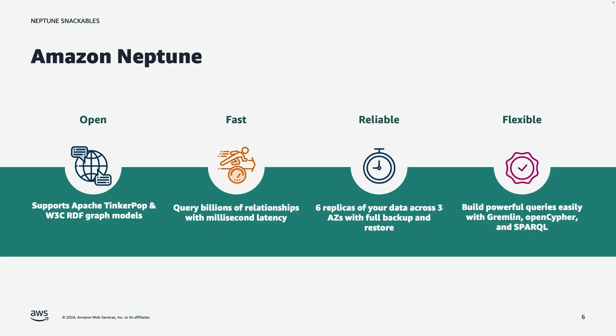Amazon Neptune is a purpose-built database within AWS that implements graph and has some important features. It is open — it supports the two main representations of graph available today: Labeled Property Graph on Apache TinkerPop, and the World Wide Web Consortium Resource Description Framework, or RDF model. Using these representations, you can achieve fast query speeds — querying billions of relationships with millisecond latency. Architecturally, Neptune maintains six replicas of your data across three availability zones, with important durability and high availability built in. It flexibly supports three main query languages: Gremlin, OpenCypher, and SPARQL.